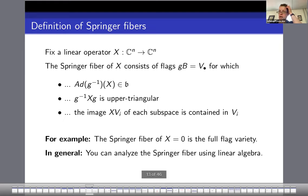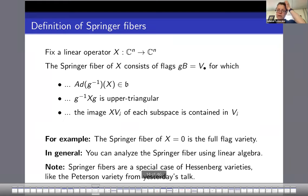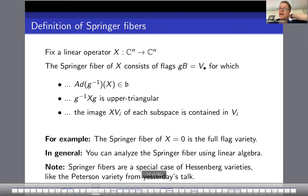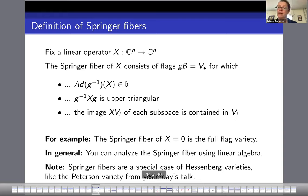Springer fibers are a special case of Hessenberg varieties, as was the Peterson variety from yesterday's talk. In the Peterson case, the condition X·V_i ⊆ V_i is loosened to X·V_i ⊆ V_{i+1}, and that condition can be loosened even more. The Peterson case also picks a particular linear operator X.